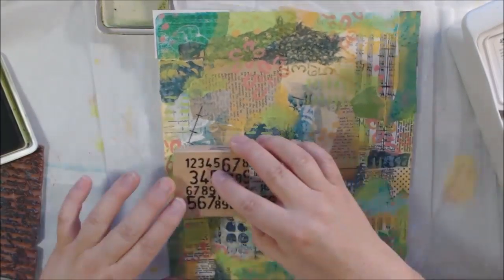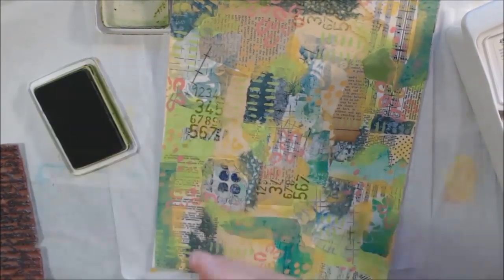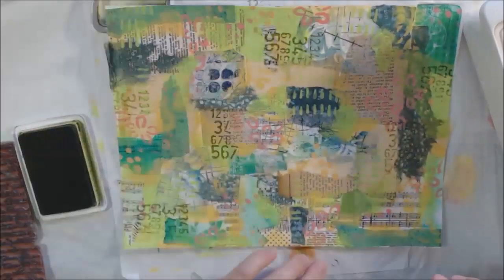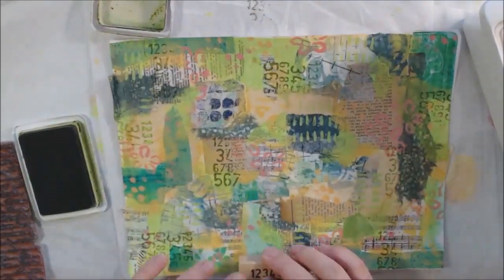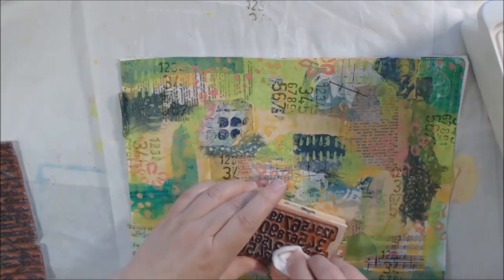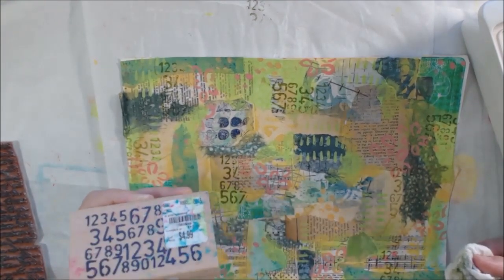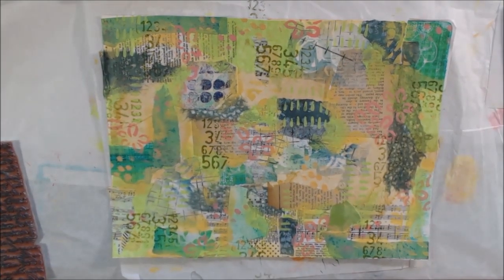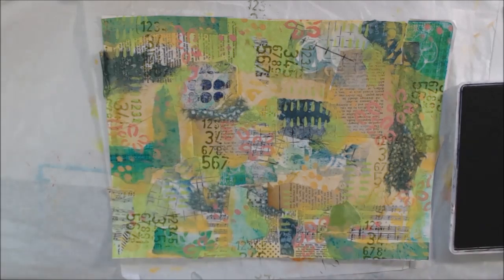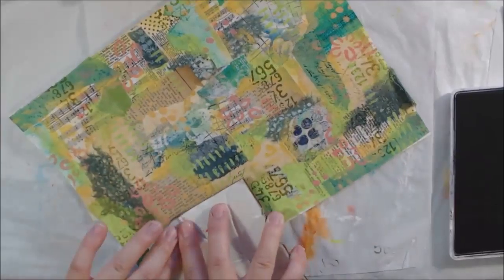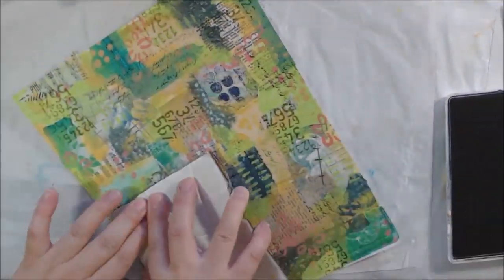Then I got out some olive-colored archival ink, which is a dark green, and did a little bit of stamping with this numbers stamp. It's a pretty cool random stamp that is good for doing this type of thing. I'll try to find it for you - I'm not even sure who makes it, but I'll look for it and try to put it in a link below the video. I always try to add links to the colors and products that I use below the video so you can find them.